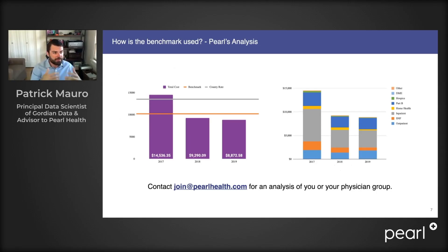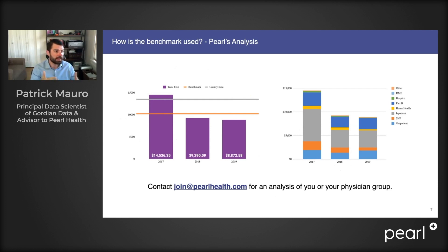This is the type of analysis that you can expect PEARL to do for you if you are a provider or a physician group. We can look at where your historical figures would compare to a 2021 benchmark. We can even dive a little bit deeper and analyze what were the cost drivers for those years. In this example, the biggest driver of costs in 2017 that disappeared in 2018 and 2019 was expenditures attached to inpatient care for the panel for this provider.